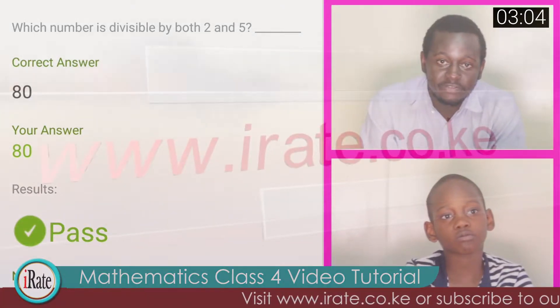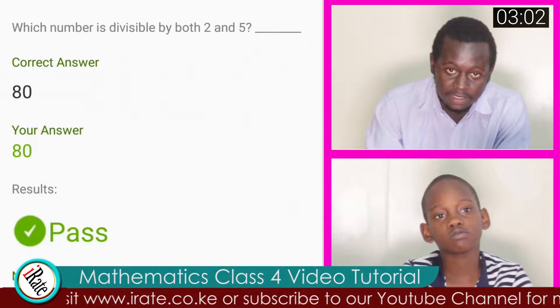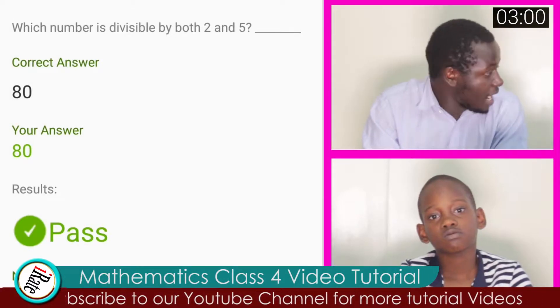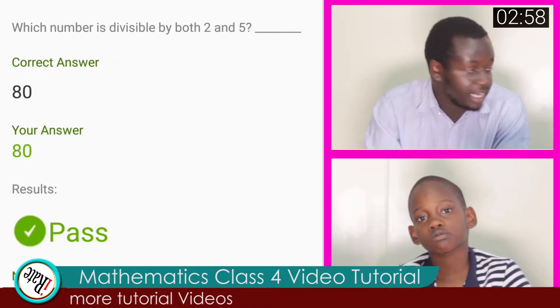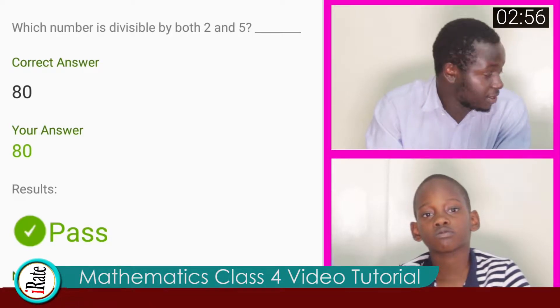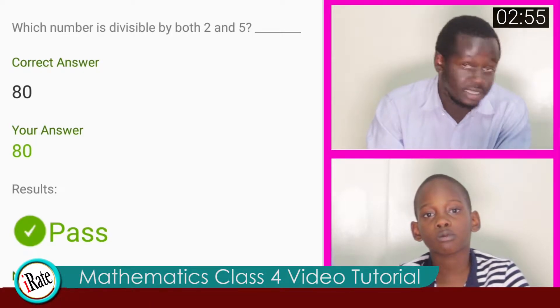Two can divide any of the even numbers, even itself. As for five, five can be able to divide any number ending with zero or five. So eighty is the correct answer.